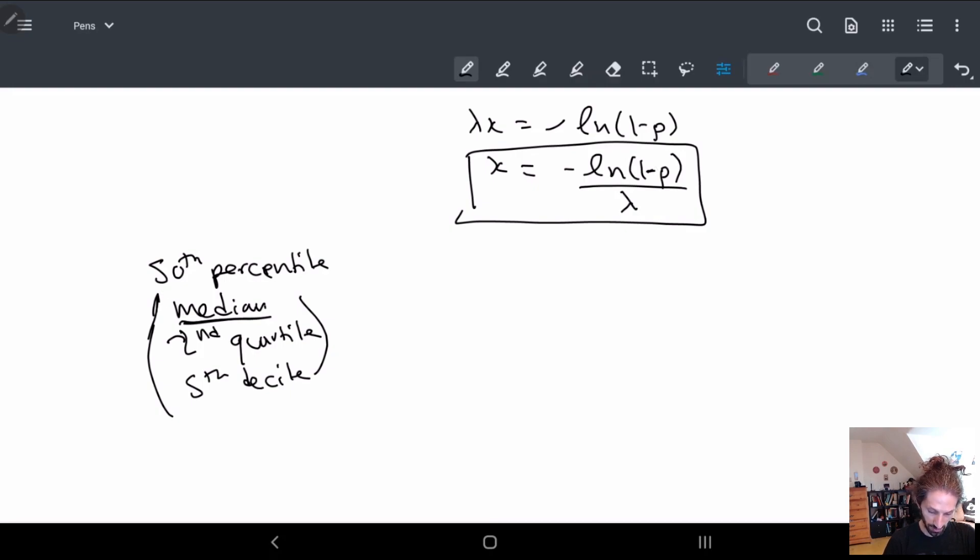We have these and we just plug in this p. So the p in all of these cases is equal to one-half. So what we have is x is equal to -ln(1 - 1/2) / λ. So we have -ln(1/2) / λ, and that's it. That'll tell you what your x is from there.